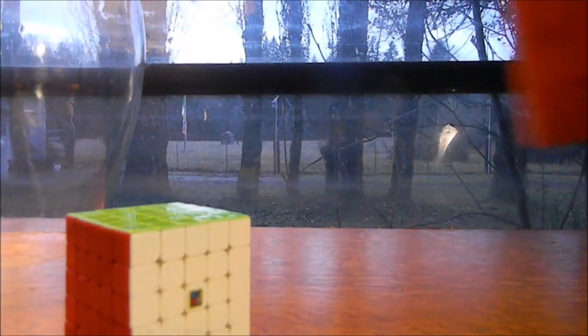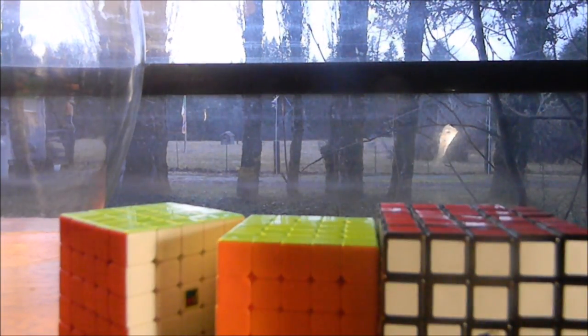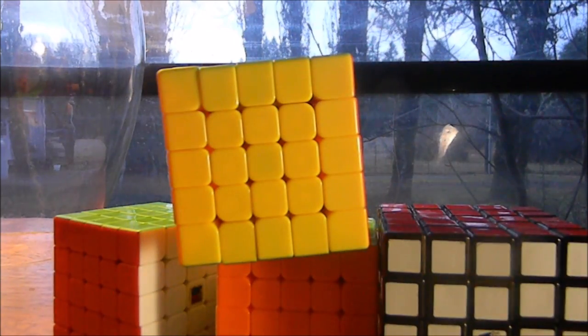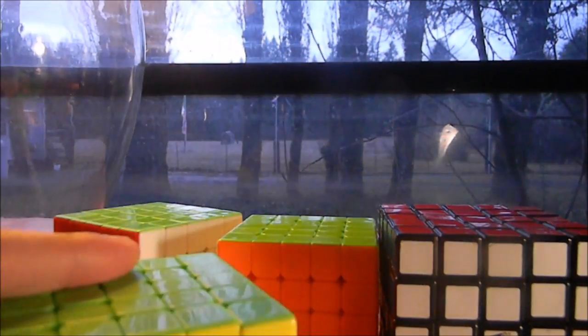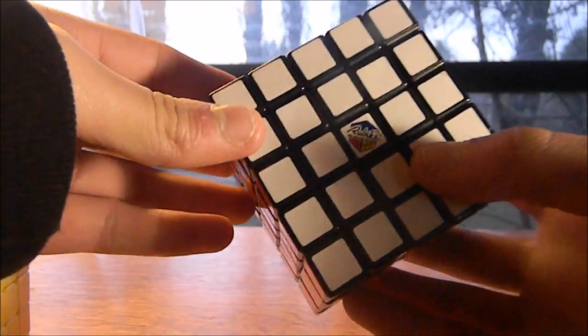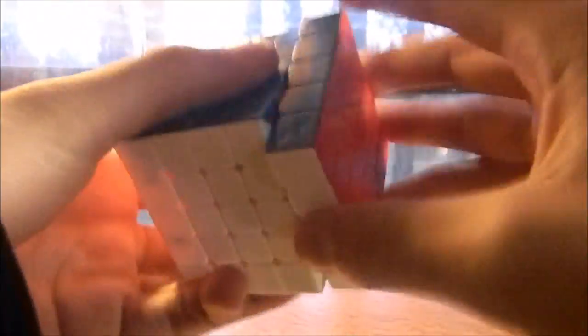We are now doing 5x5. As you can hear in the background Max has whooping cough and has 3 days to live. Here we have the Rubik's brand 5x5. Here we have the Valk 5 which is coated in so much lubricant that is unusable.